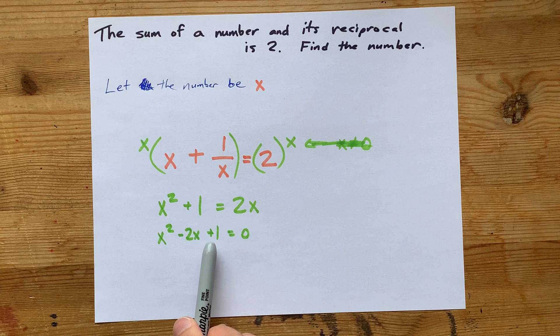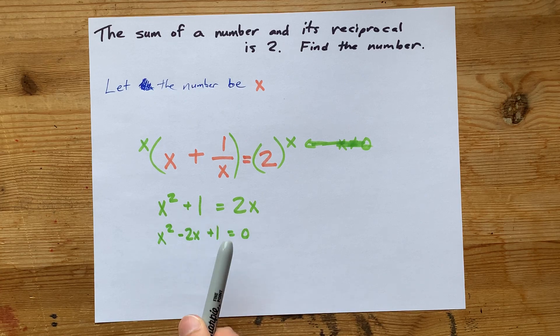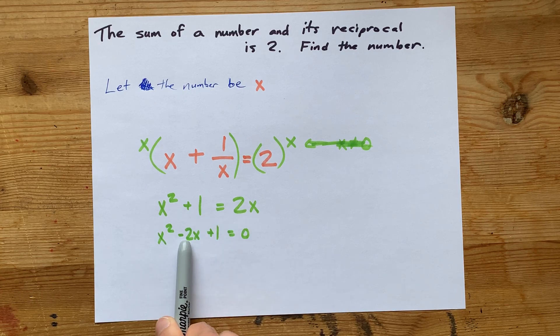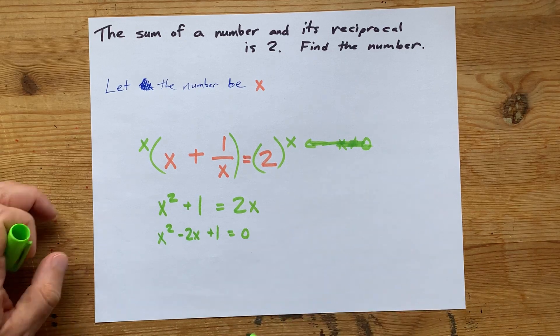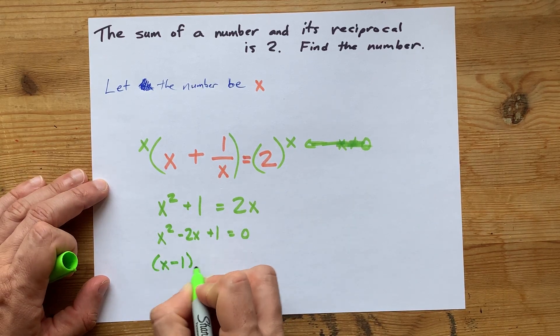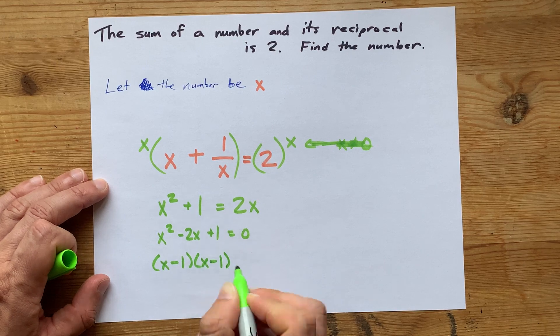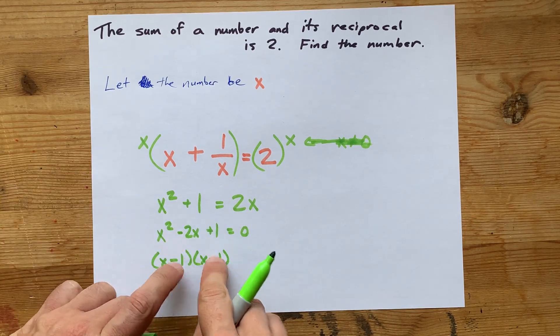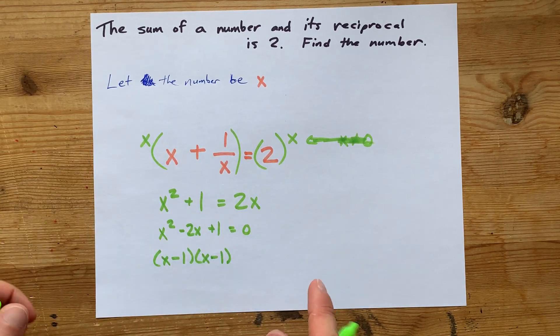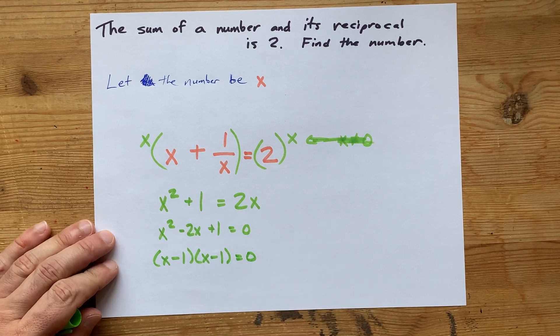What two numbers multiply to 1 and add to negative 2? Maybe that's not immediately obvious, but negative 1 and negative 1 add to negative 2, and they multiply to positive 1. So that's my factored form.